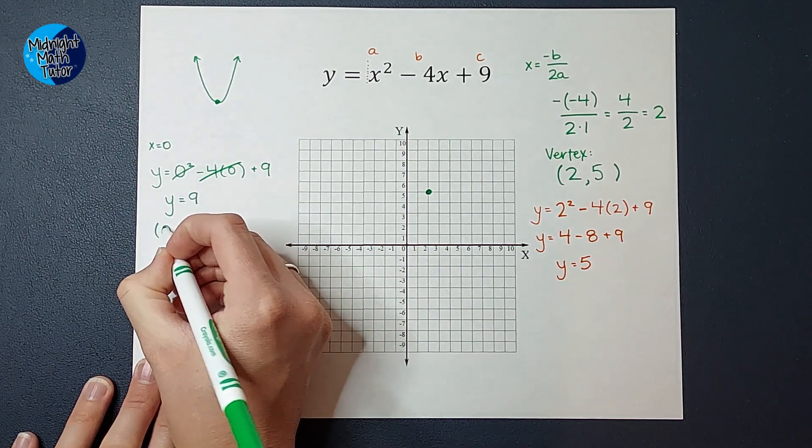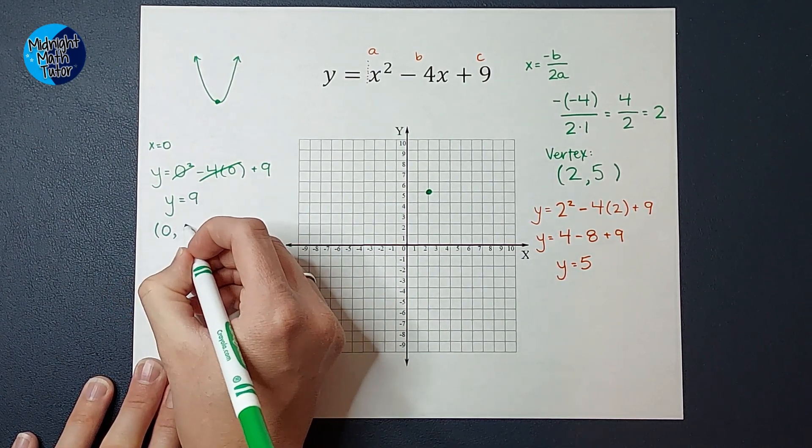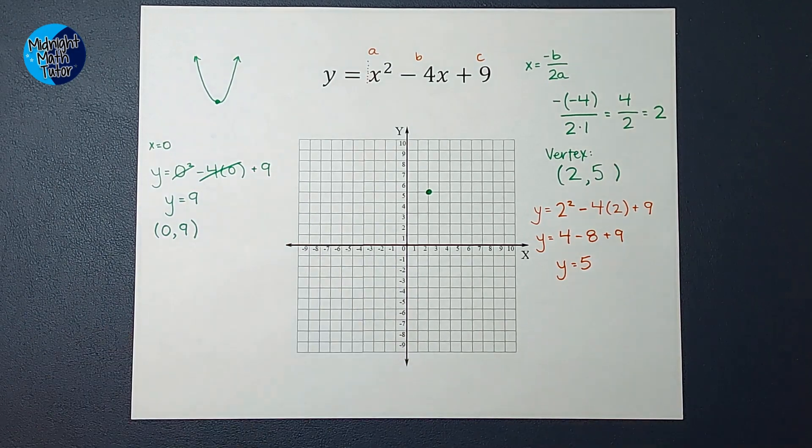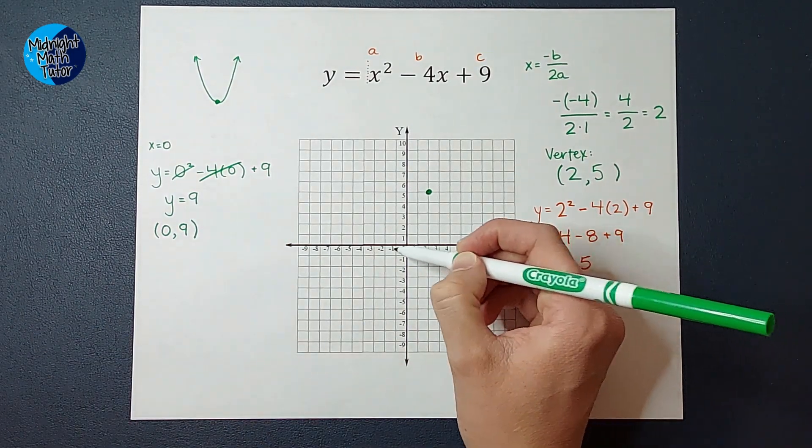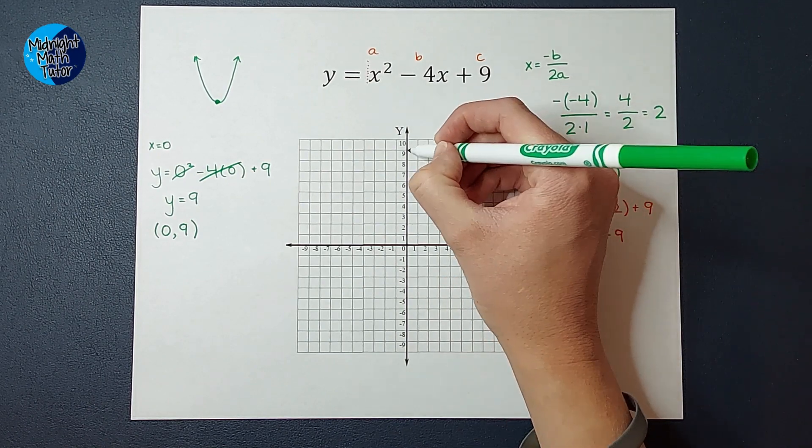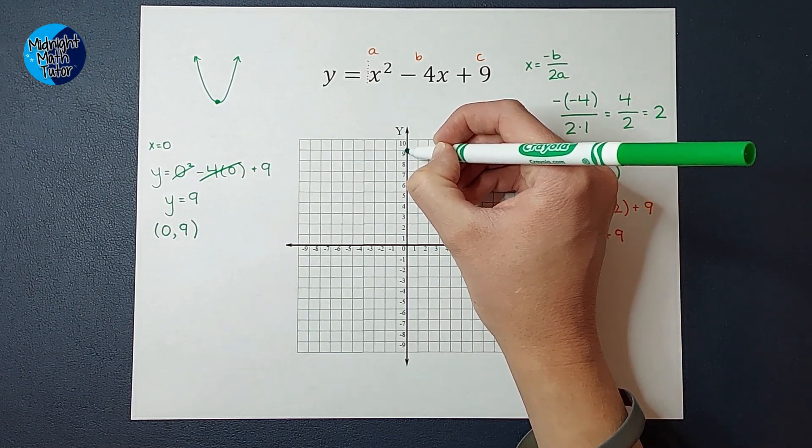Which means my ordered pair, when x is 0, y is 9. So that means this point on the parabola is 0 up to 9.